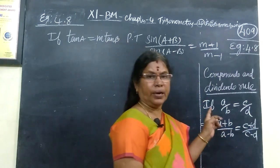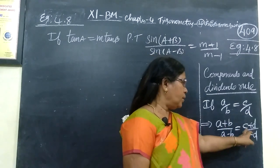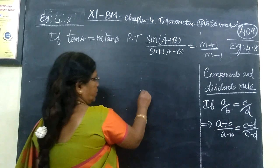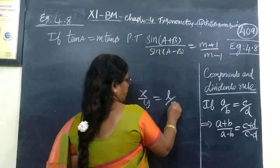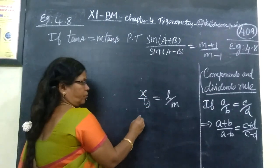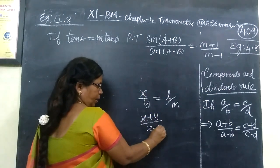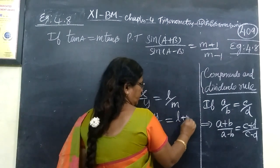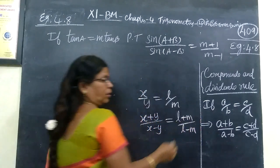You are adding in the numerator and separating in the denominator. This side also, if you are adding in the numerator, separating in the denominator. Suppose x by y is equal to l by m. Using componendo and dividendo rule, you are adding both in the numerator and separating both in the denominator.